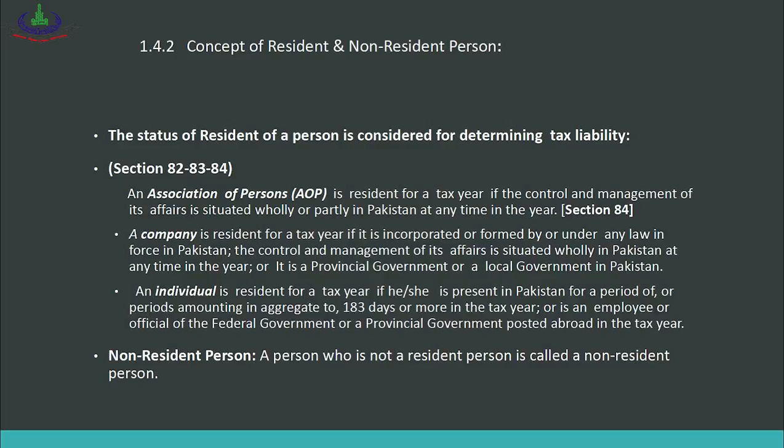For a company, Section 85 states: a company is resident for a tax year if it is incorporated under any law in force in Pakistan, the control and management of its affairs is situated wholly in Pakistan at any time in the year, or it is a provincial government or local government in Pakistan. So a company is considered resident when it is formed under Pakistani law, its control and management is completely in Pakistan, or it is a provincial or local government. For an individual, an individual is resident for a tax year if he or she is present in Pakistan for a period or periods amounting to 183 days or more in the tax year, or is an employee of the federal or provincial government of Pakistan posted abroad.